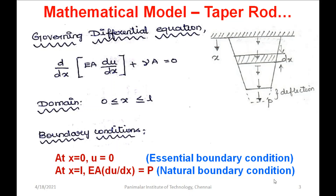This completes the mathematical model for the taper rod. Now we will see how to solve this mathematical model using a numerical method. We are going to start with the weighted residual method, which is one of the functional approximation methods falling under the numerical methods category.